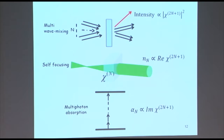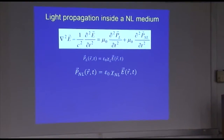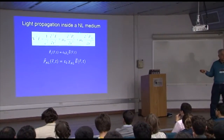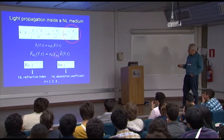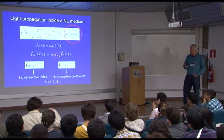There are many effects to study: multi-wave mixing where several waves incident on the sample generate a wave with intensity proportional to the square modulus of CHI-(2N+1), self-focusing associated with different susceptibility orders, and multi-photon absorption. Light propagation in the medium is described via Maxwell's equations including the nonlinear polarization term. We consider the order of susceptibility to describe propagation in a particular system.